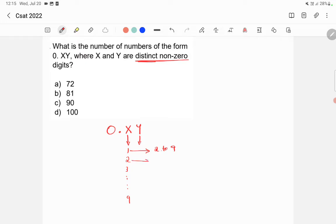When x is 2, y will be 1, then 3 to 9, right? So similarly, it will go like that.